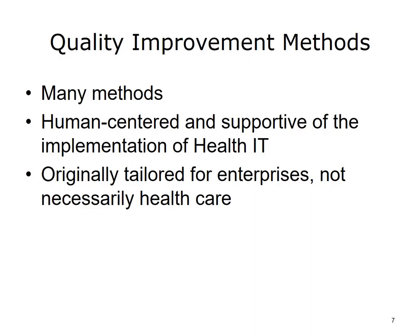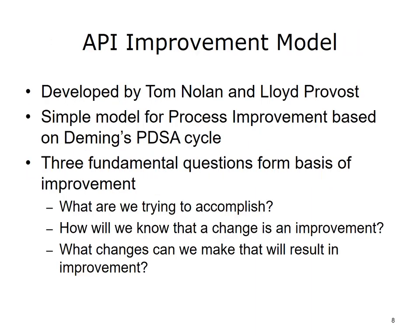For example, Six Sigma was designed for manufacturing, but has spread to service enterprises, including healthcare. Each of these has met with success, but application of these methods in healthcare has also met with challenges. The API, Associates for Process Improvement Model, was developed by Tom Nolan and Lloyd Provost. It is a simple model based on Deming's PDSA cycle and uses three fundamental questions: what are we trying to accomplish? How will we know that a change is an improvement? And what changes can we make that will result in improvement? Focus is frequently on small improvements and testing results to verify improvement — an incremental approach that makes big improvement through many small improvements.